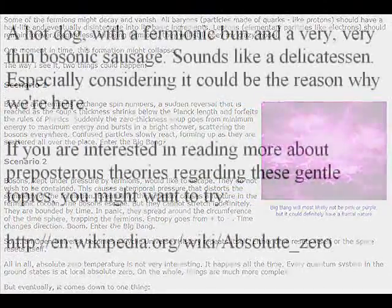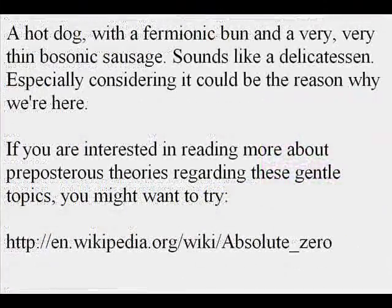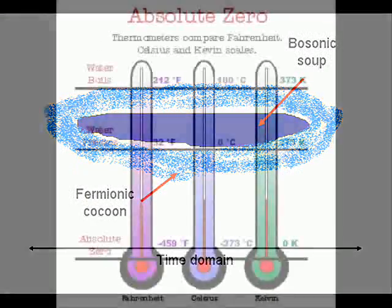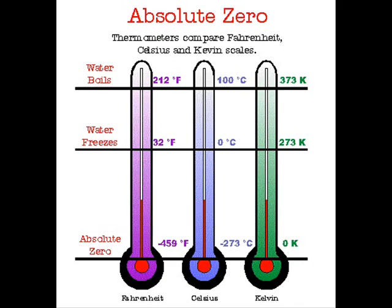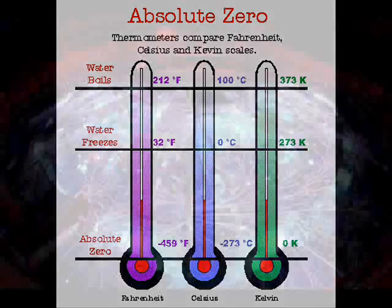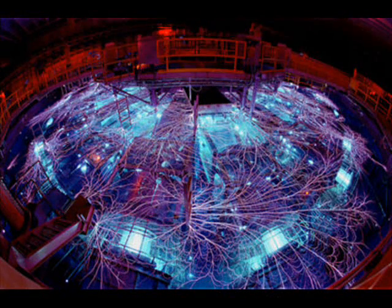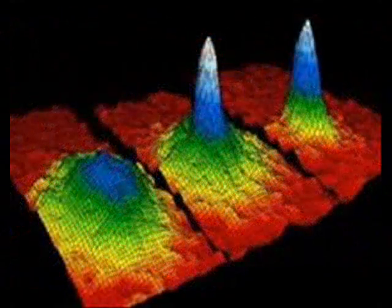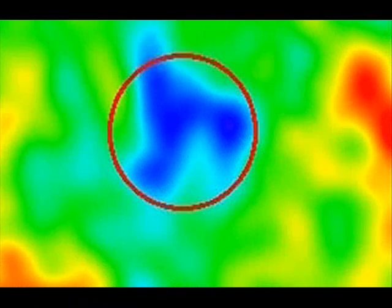Surely we can't cool them down any further than this point, because you can't go slower than stopped. This hypothetical point is called absolute zero — negative 273.15 degrees Celsius. And I say hypothetical, because nobody has been able to actually cool something down this cold. Scientists have come very close, but no one has actually been able to reach absolute zero.